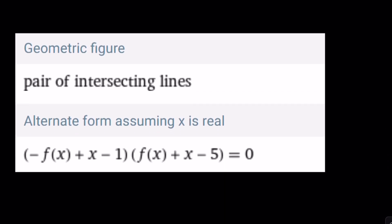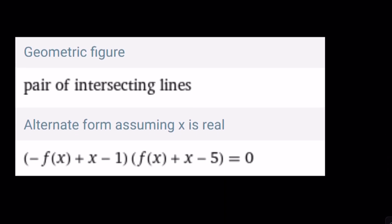All righty. Well, Wolfram Alpha says this is a pair of intersecting lines. Yes, that's what it is. There are two solutions, and they're both linear. And as you can see, Wolfram Alpha is able to solve this functional equation. Good job, Wolfram Alpha. And keep up the good work.